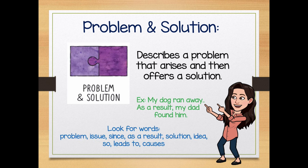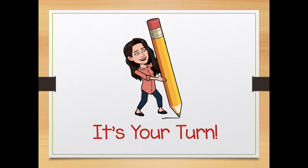Look-for words for problem and solution are: problem, issue, since, as a result, solution, idea, so, leads to, and causes. Friends, you are an expert on the five different types of text structures. Let's see what you can do today in your own reading.